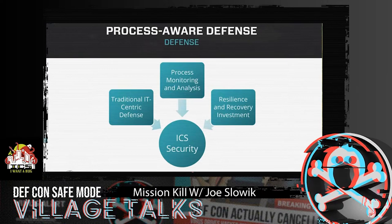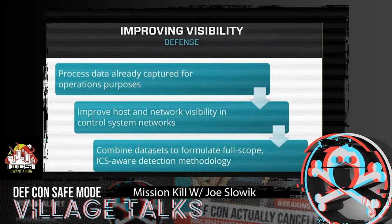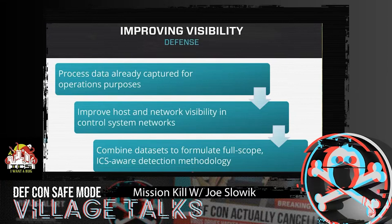A key to doing this is improving visibility into industrial environments. While we already see process data captured for operations purposes through data historians, we need to combine that with improved host and network visibility — much like what we've seen over the past five years in enterprise IT environments — to develop a full-scope ICS-aware visibility of both the IT and ICS-specific aspects of an operating environment. This helps us truly understand and track what's going on within the control system environment, both from a defensive perspective and to detect a malicious insider or other entity making changes that could have significant or harmful repercussions.